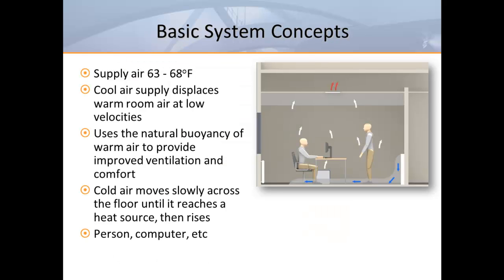Displacement systems typically supply 63 to 68-degree air through specially designed diffusers located on low sidewalls. This cool air discharges at less than 80 feet per minute from the face of the diffuser and quickly cascades down to the floor. The air continues to move slowly across the room in a layer about four inches deep until it locates a source of heat or an obstruction. In office applications, the heat sources in the occupied zone are usually people and equipment. When the slow-moving pool of air encounters a heat load, it quickly rises and carries the heat and pollutants towards the ceiling. Internal heat loads and contaminants are then carried away by the return air — we refer to this as a thermal plume.